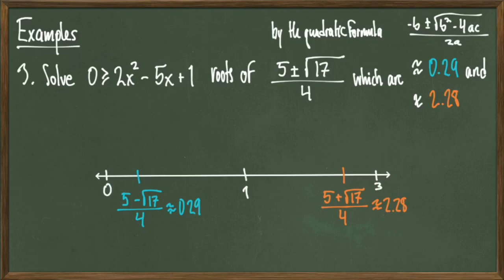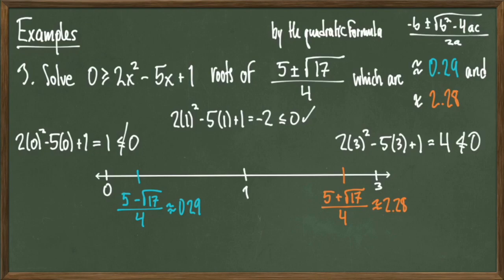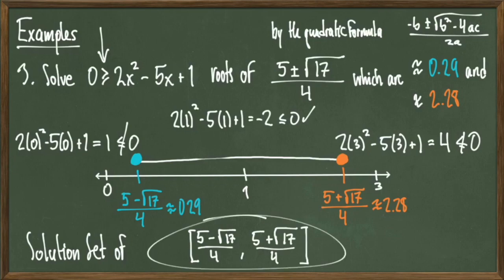I choose test points 0, 1, and 3 because they exist around and between my roots. Plugging in 0 gives 1, which is not less than 0. Plugging in 1 gives -2, which is less than or equal to 0. Plugging in 3 gives 4, which is not less than 0. So the portion between the two roots is what I want. Since the inequality uses ≤, I shade in the circles, and the solution is the closed interval [(5 - √17)/4, (5 + √17)/4].